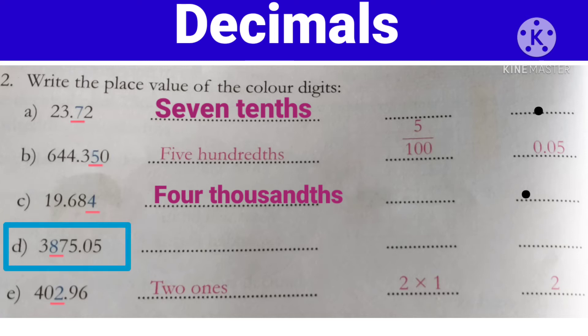Now next one — d) 3875.05. Yahaan 8 ko underline karawa hai. 8 jo hai, woh whole part mein se aayega. Toh hume whole part ko ones, tens, hundreds, thousands places se count karenge. Aur fractional part ko hum 10th place se start karenge. Yahaan dekhiye: 5 ones place pe hai, 7 tens place pe hai, aur 8 hundreds place pe hai. Toh 8 — hundreds.